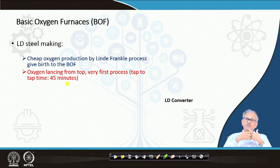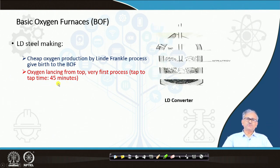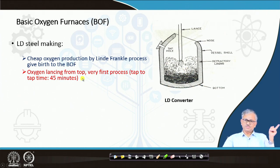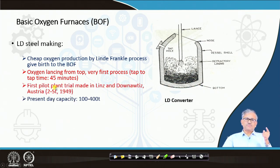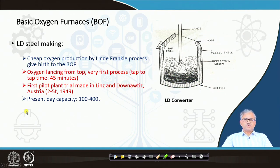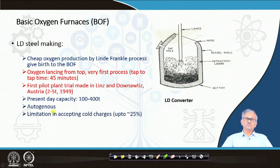First slag foam formation takes place, and in the slag foam a lot of metal iron droplets join and form an emulsion. The refining of the liquid metal takes place in the emulsion where the surface area is tremendous — and that is why it is only 45 minutes. The furnace looks almost like the Bessemer furnace, only it is more rounded to facilitate mass transfer. Oxygen lancing is there, and in the emulsion the slag-metal surface area is tremendous — you can carry out refining in very short time, so from 10 or 6 hours it is reduced to 45 minutes. The first pilot plant was set up in Linz and Donawitz — 2 to 5 tons in 1949/1950. Its present capacity is 100 to 400 tons.